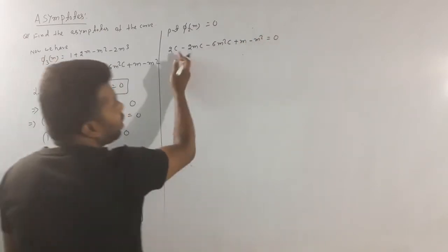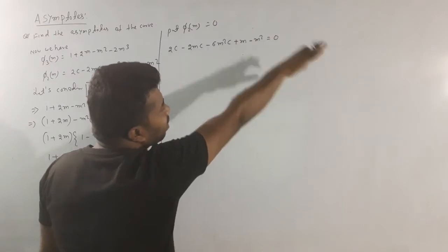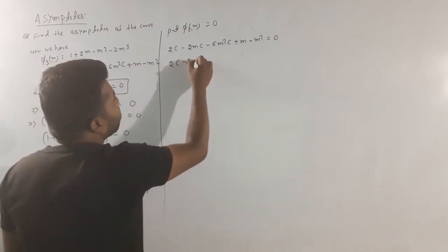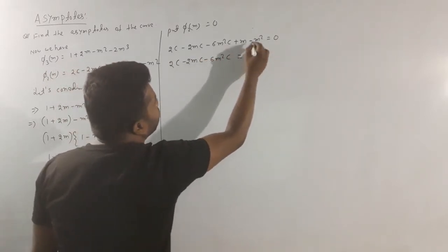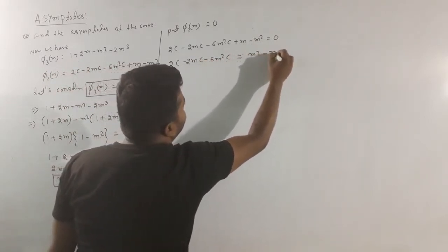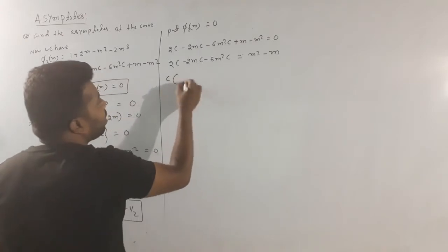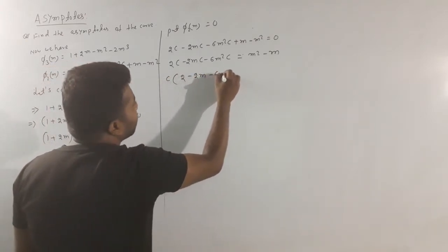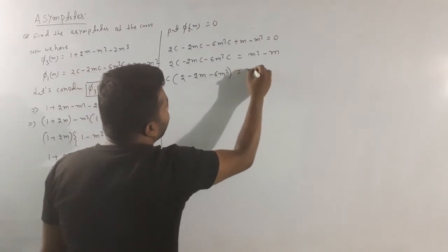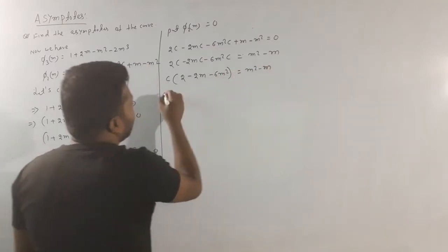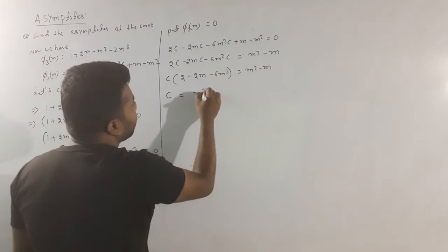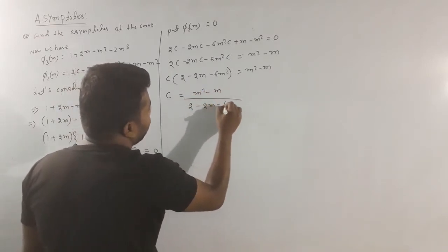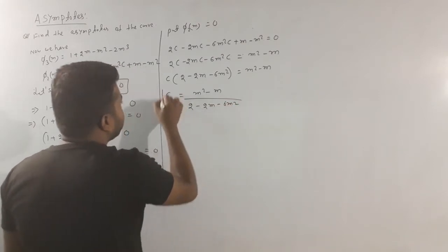Keep the terms with c on the left side and shift terms without c to the right side: 2c minus 2mc minus 6m²c equals m² minus m. Taking c common: c times (2 minus 2m minus 6m²) equals m² minus m. Therefore, c equals (m² minus m) divided by (2 minus 2m minus 6m²).